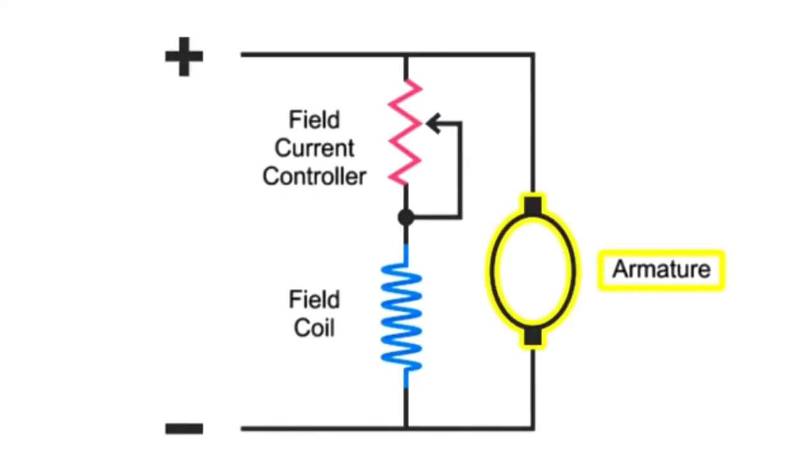In this diagram we have an armature, which as you know is the part that rotates in the presence of a magnetic flux, a field coil that generates a magnetic field, and a controller to vary the field resistance, thus altering current flow and the strength of the magnetic field.